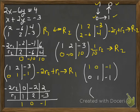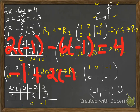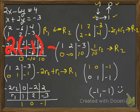We've finished our RREF — Gauss-Jordan elimination. Both x and y equal negative 1. Let's check: 2 times negative 1 minus 6 times negative 1 is negative 2 plus 6, which is 4. Good. The other equation: negative 1 plus 2 times negative 1 is negative 3. Both solutions check out. We'll also do a 3x4 system in class, which will take a bit more time. Thank you.